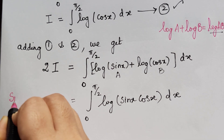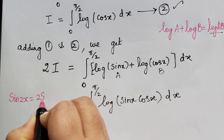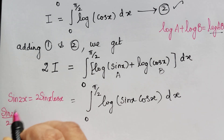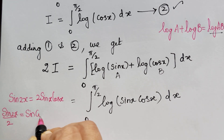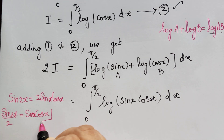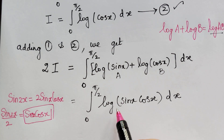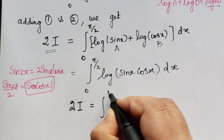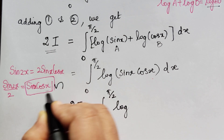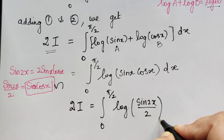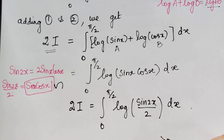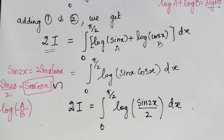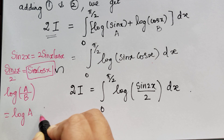Now we apply the trigonometric identity sin 2x = 2 sin x cos x, which gives sin x cos x = sin 2x / 2. So sin x cos x is replaced by sin 2x / 2. Then we apply the logarithmic property log(a/b) = log a − log b.